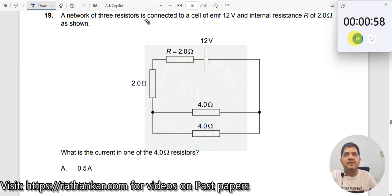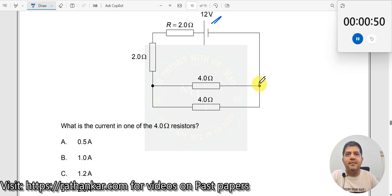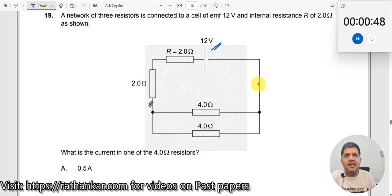Question number 19. A network of three resistors is connected to a cell of EMF 12 volt and internal resistance of 2 ohms as shown. What is the current in one of the 4 ohm resistors? What is the current passing through this one?